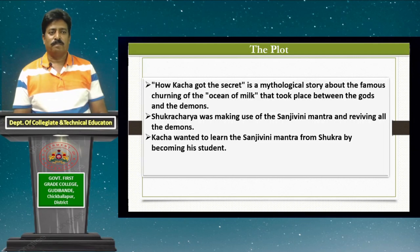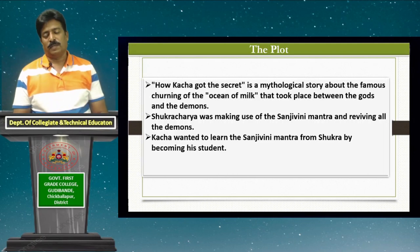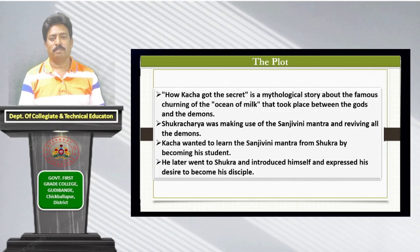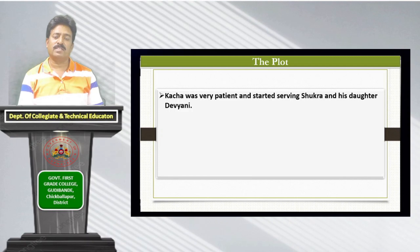The gods feared that Kacha might fall in love with Devayani, the only daughter of Shukracharya, since she was exquisite. But Kacha assured them he would never fall in love with her and even took a vow not to marry until he fulfilled his mission. Kacha later went to Shukracharya, introduced himself, and expressed his desire to become his disciple. Shukracharya taught him many things but not the Sanjivini mantra, yet Kacha remained patient.